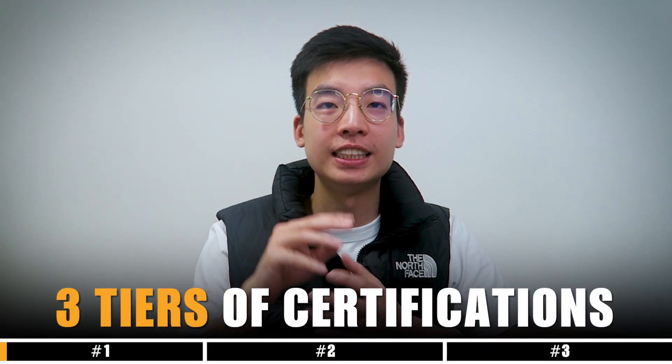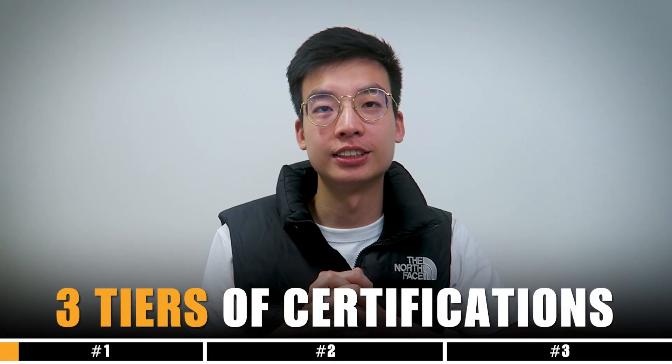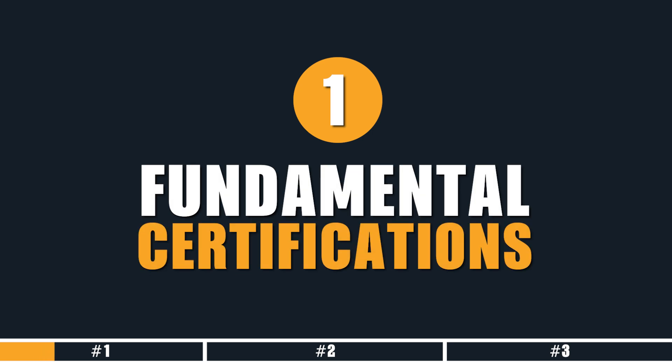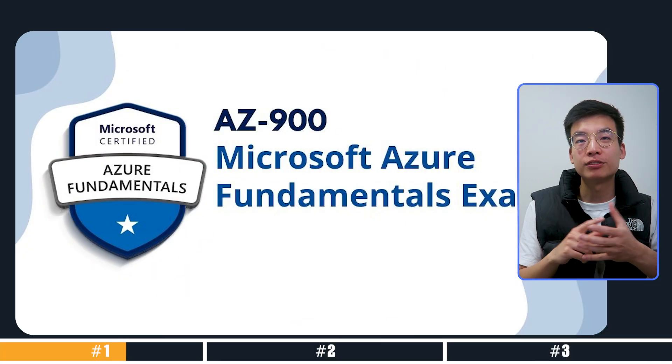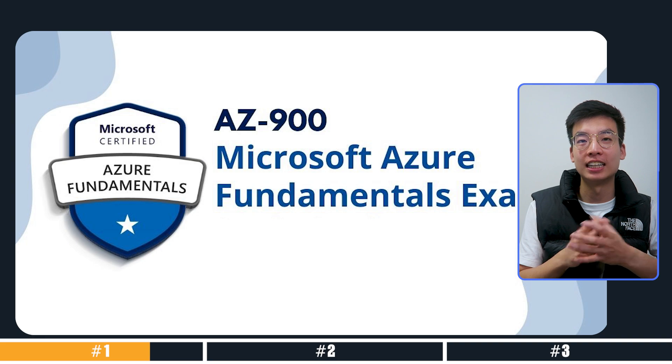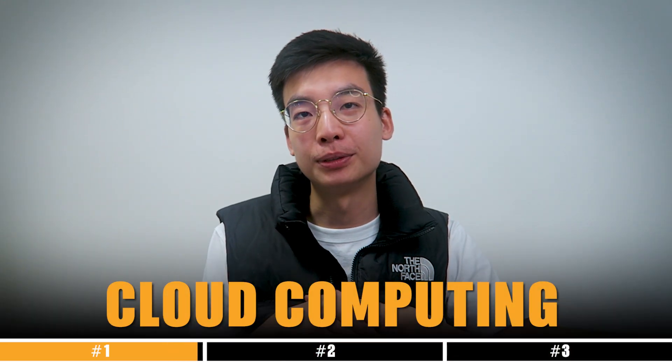Under each solution area, there are three tiers of certifications. The first being Fundamental certifications — as the name suggests, these cover the conceptual knowledge and skills related to the tech solution. An example is AZ-900 Azure Fundamentals, which provides an overview of cloud computing.